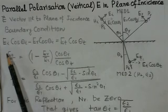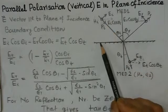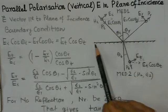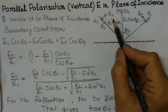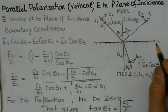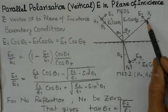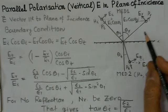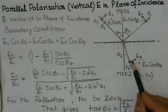We have to apply the boundary condition in this case. Applying the boundary condition, E_I is the electric field and we can find the component of the electric field in the direction of the boundary — that means in this plane. The component E_I cos(θ_I) will be the component in the x-direction. Similarly, the reflected wave would have its component E_I cos(θ_I) in the opposite direction. So we can write: E_I cos(θ_I) minus E_R cos(θ_I) equals E_T cos(θ_T).